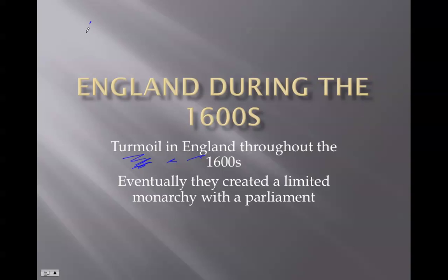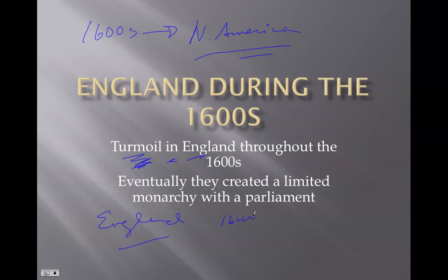In the 1600s, a lot of English colonists started going to North America. You have to ask yourself: why were so many people leaving England to cross the very dangerous Atlantic Ocean? Because England was not a fun place to be in the 1640s — there was a civil war. You can even see some similarities between what was going on in Europe at this time and places like Syria today. Places develop in different ways at different times.